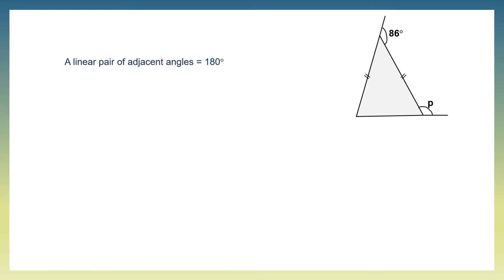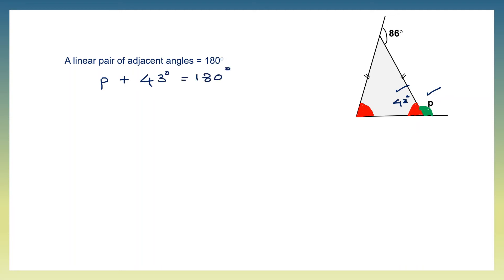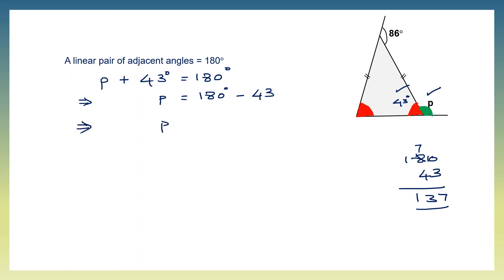Now we can find angle p using the property that a linear pair of adjacent angles equals 180 degrees. Angle p and 43 degrees are a linear pair, so p plus 43 degrees equals 180 degrees. Therefore p equals 180 minus 43, which is 137 degrees. So angle p is 137 degrees.